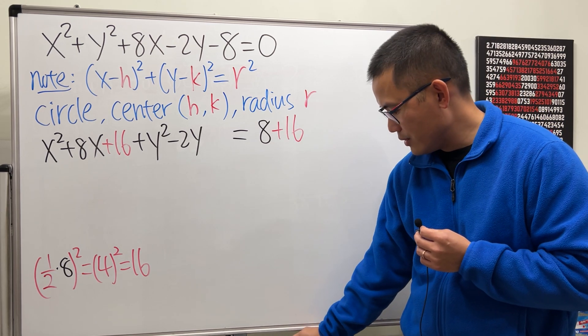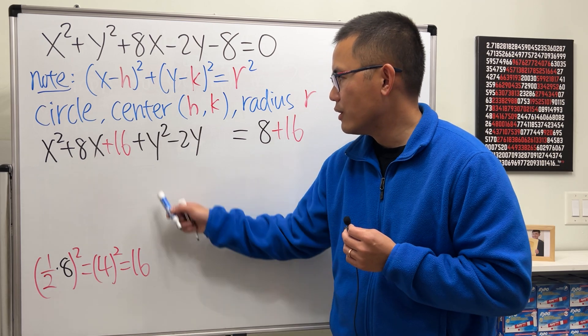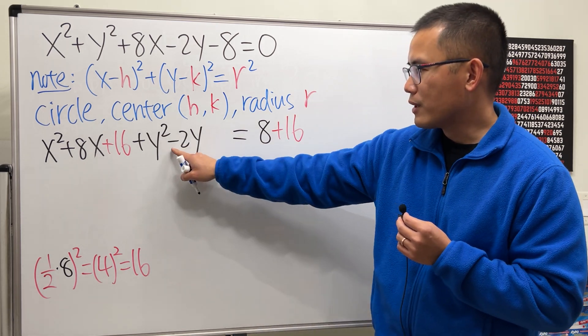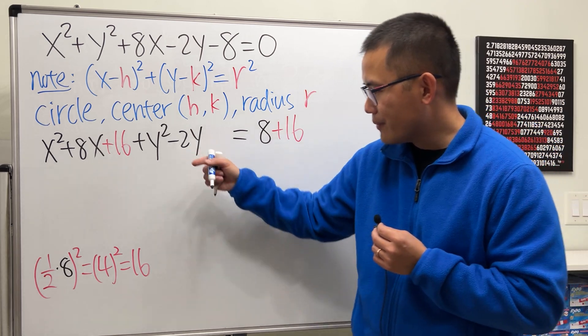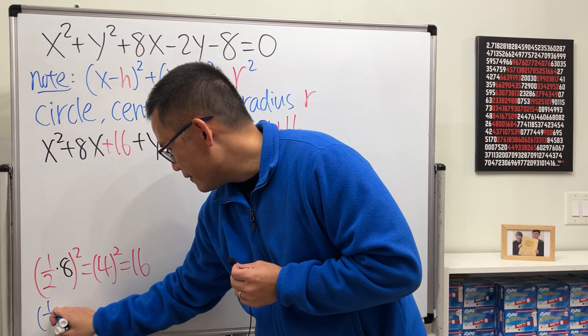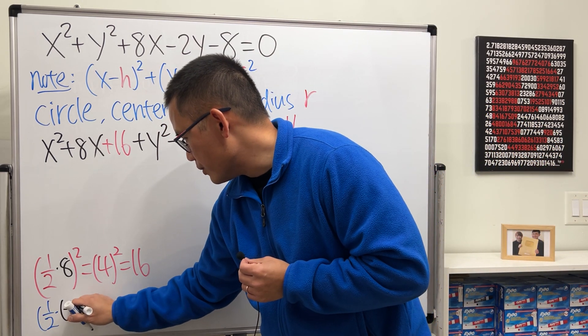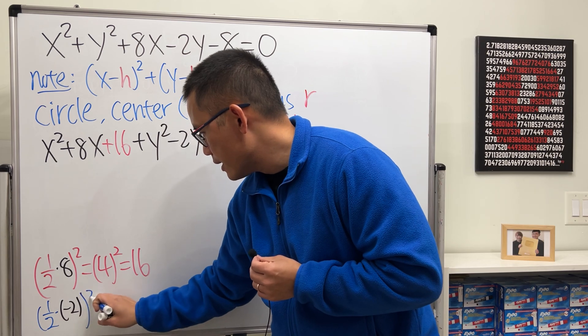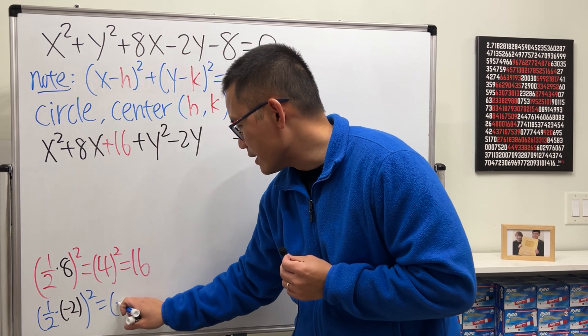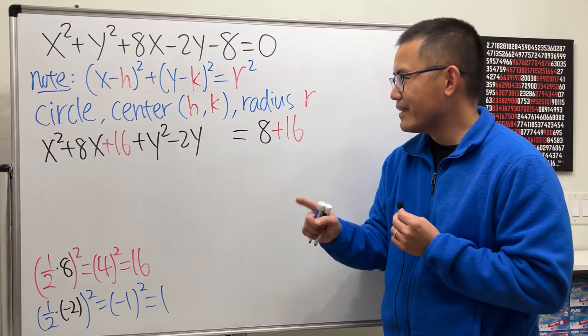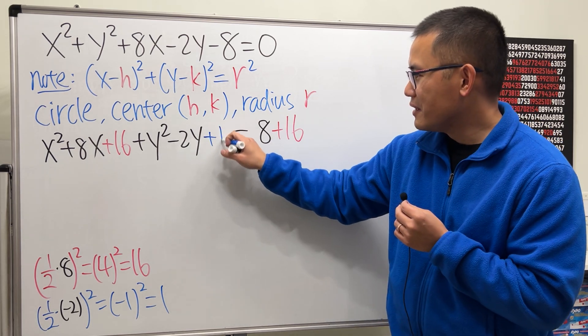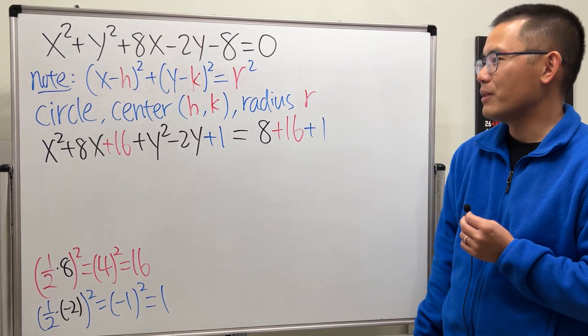Next, we are going to complete the square for the y. And we focus on this number, and yes, we have 1 in front of the y². So, we take 1/2 of -2. Half of -2 is just -1. Square that, it's just 1. So, we are just going to add 1 here, and of course, do the same thing to the other side.